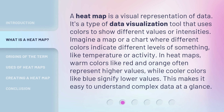A heatmap is a visual representation of data. It's a type of data visualization tool that uses colors to show different values or intensities. Imagine a map or a chart where different colors indicate different levels of something, like temperature or activity. In heatmaps, warm colors like red and orange often represent higher values, while cooler colors like blue signify lower values. This makes it easy to understand complex data at a glance.